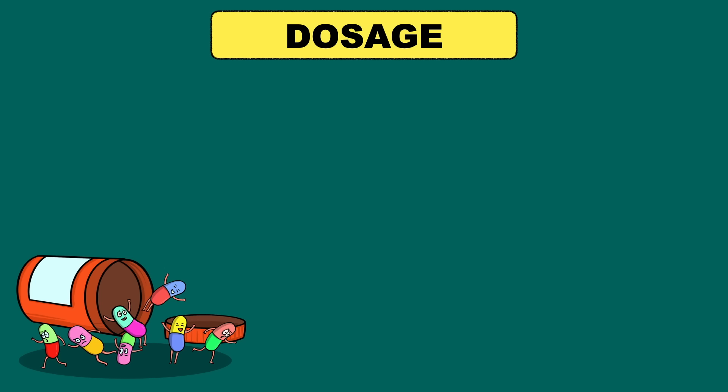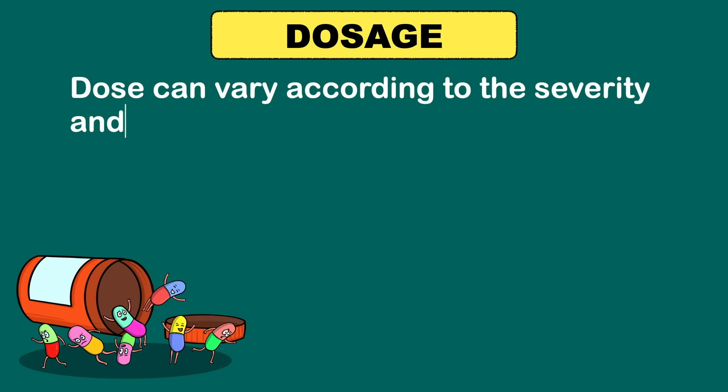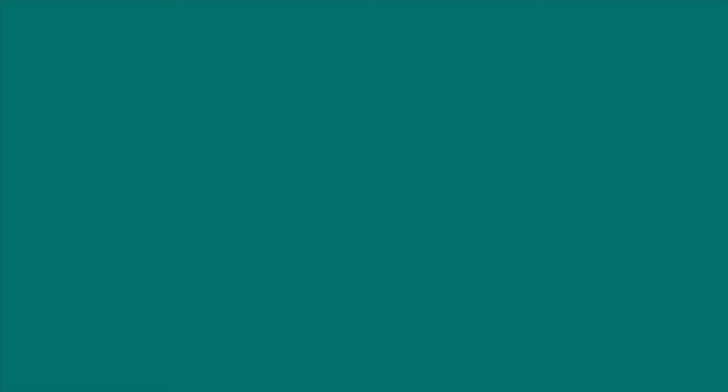Tadalafil tablets for pulmonary hypertension come in 20 mg strength. So you will have to take 2 tablets at a time once a day. But remember, this dose can vary according to the severity and health conditions. So always consult your doctor before taking the medicine.